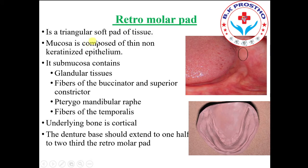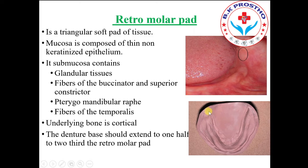The retromolar pad is a triangular soft pad of tissues where the mucosa is composed of thin, non-keratinized epithelium. It contains glandular tissues, fibers of the buccinator and superior constrictor muscles, the pterygomandibular raphe, and fibers of the temporalis muscle. The underlying bone is cortical bone. The denture base should extend to one-half to two-thirds of the retromolar pad, which is found at the most distal part of the residual ridge. This is the retromolar pad, which you can see clinically in the patient's mouth and on the diagnostic cast.